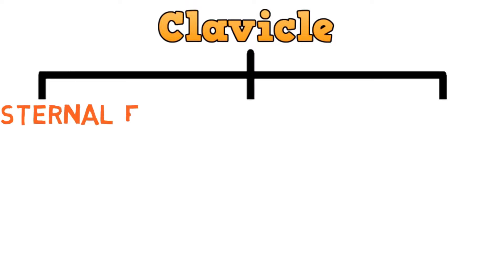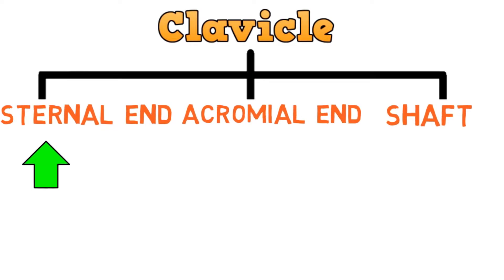Clavicle has three parts: sternal end, acromial end, and the shaft. We will discuss each of these separately and see what anatomical features they possess.